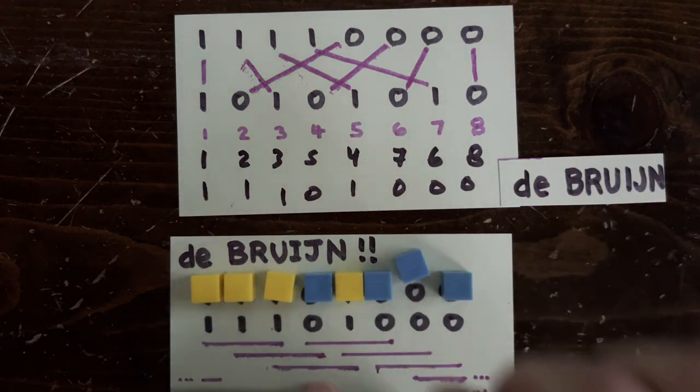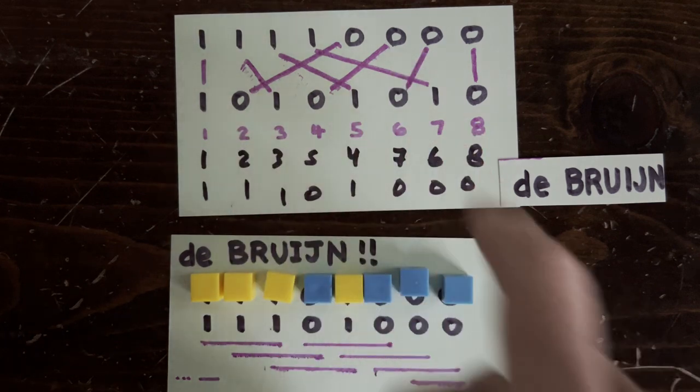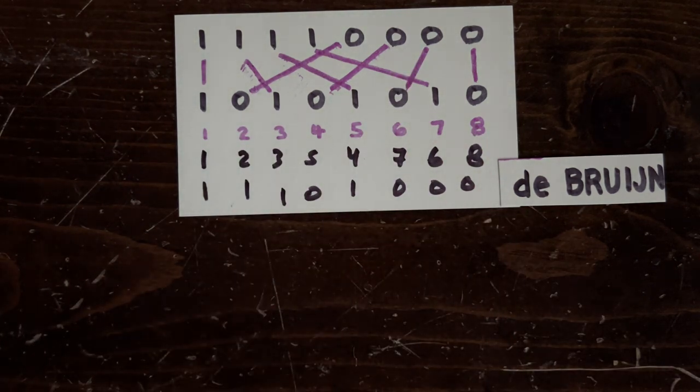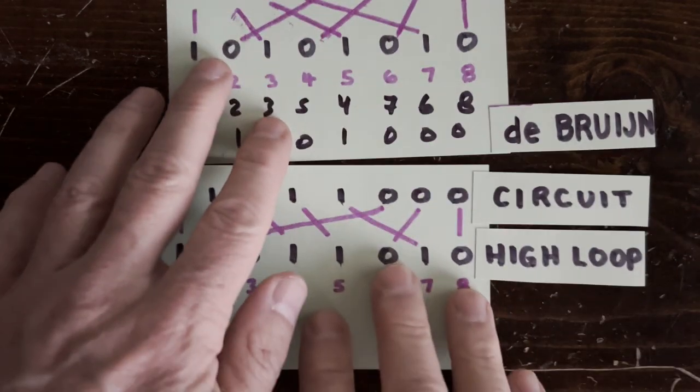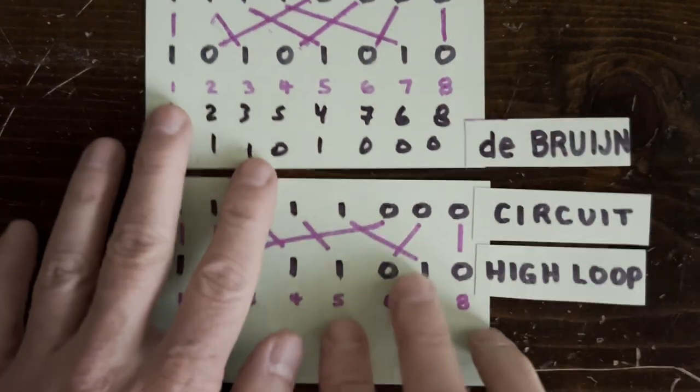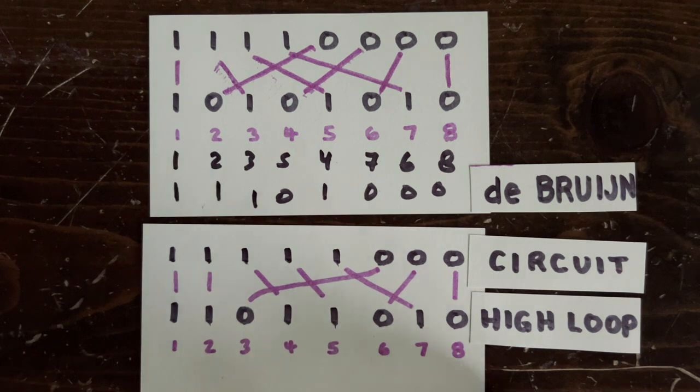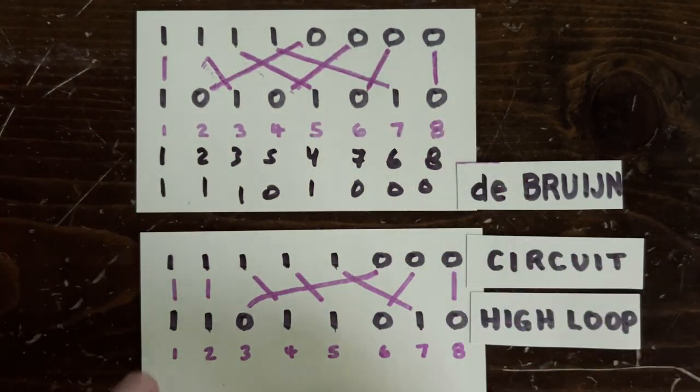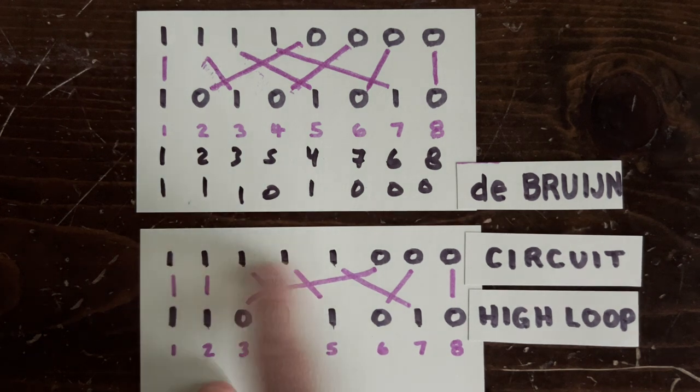Now, one wrinkle, these de Bruijn sequences here have equal numbers of 0s and 1s, but our 3n plus 1 sequences need to have about 60% 1s. But this kind of looks like the circuit loop, and this kind of looks like the high loop, with 1s spread evenly through 0s. So we can run the same de Bruijn construction using circuits and high loops.